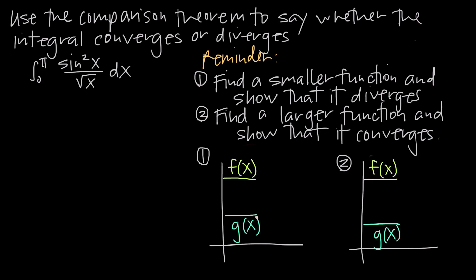If we can show that relationship between the two functions, then we can use the comparison theorem to say that if g, the smaller function, diverges, then it's going to prove that the larger function f also diverges. Because if g diverges to infinity, and f always has to be above g, f can't converge — the graph of g forces the graph of f upward and also to diverge. So starting with g, if we can prove that g diverges, then it proves that f also diverges.